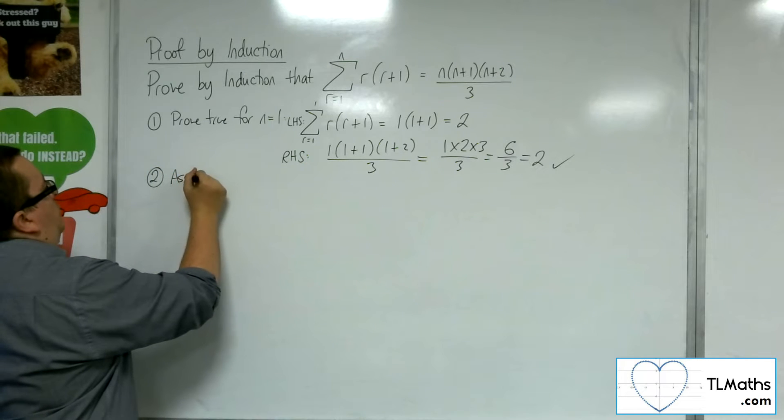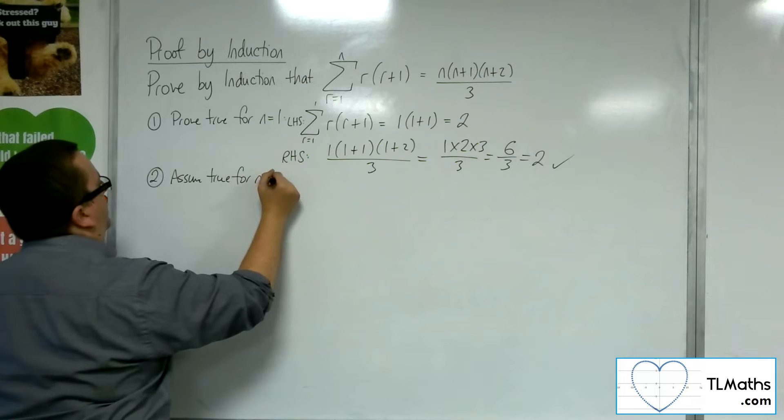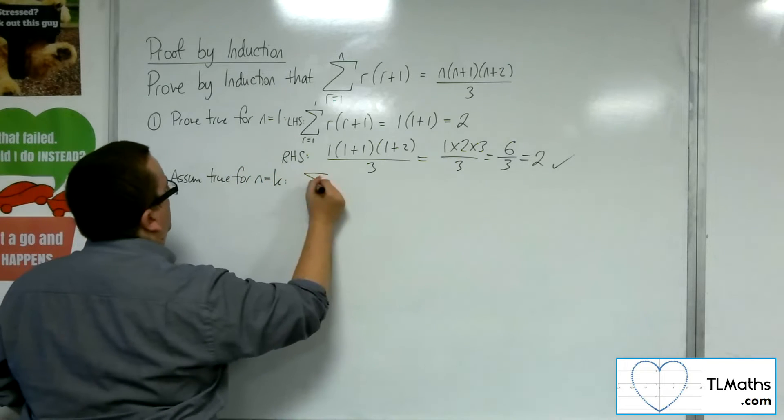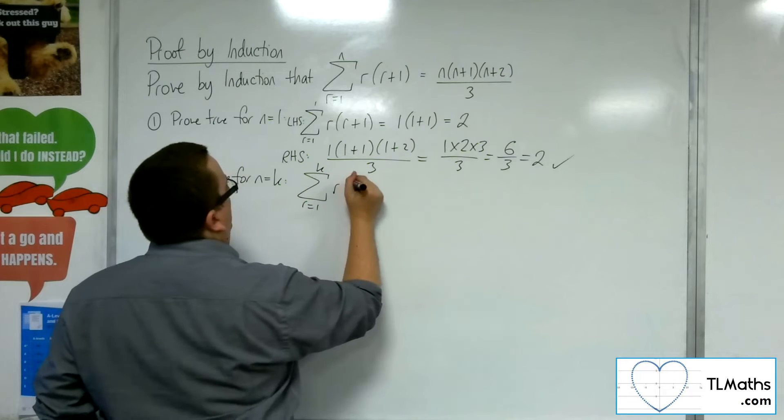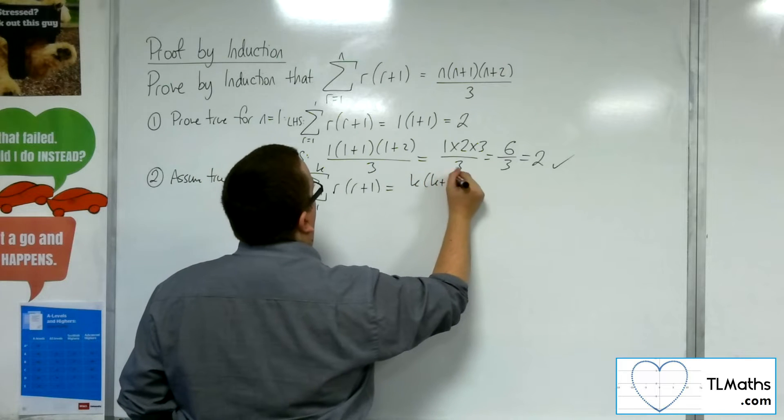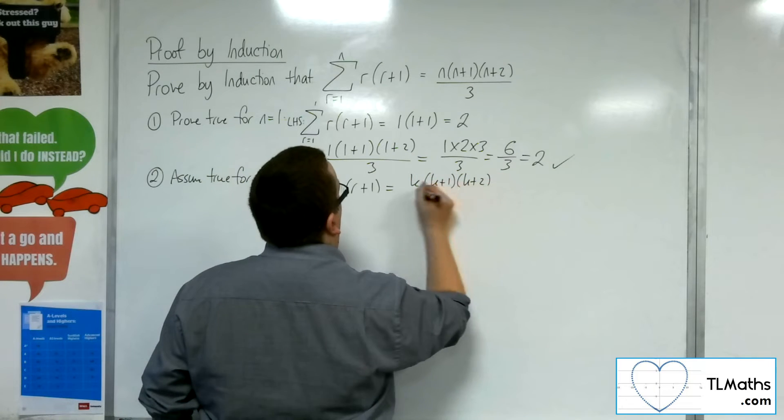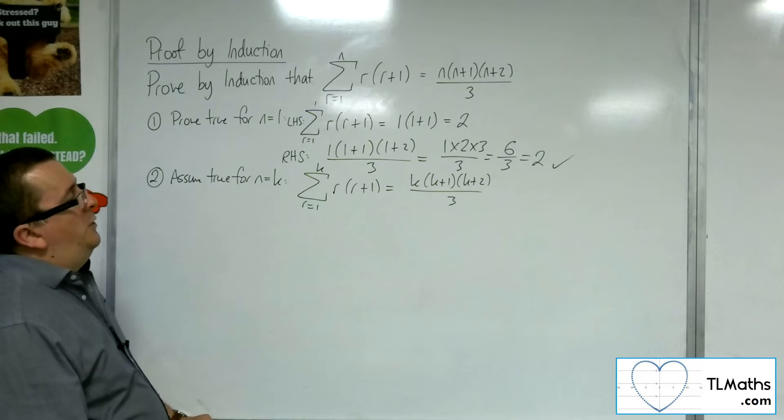We then assume true for n equals k. So the sum from r is 1 to k of r times r plus 1 is going to be k times k plus 1 times k plus 2, all over 3. So that's our assumption.